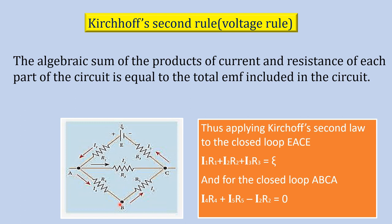And for the closed loop ABCA here I4 R4 plus I5 R5 but the current is flowing from A to C and not from C to A, and so this is considered to be opposite. The current is flowing in the opposite direction to that of I4 and I5 and so it is considered to be minus I2. Here there is no EMF included in this loop and so applying Kirchhoff's second law I4 R4 plus I5 R5 minus I2 R2 is equal to 0.